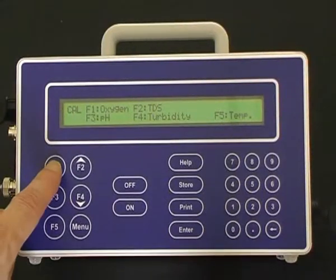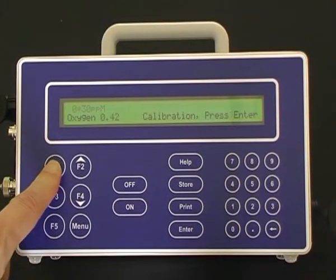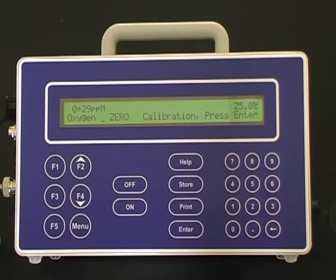Press F1 to calibrate oxygen. Allow sufficient time for the dissolved oxygen sensor to equilibrate to zero. This may take three to five minutes.